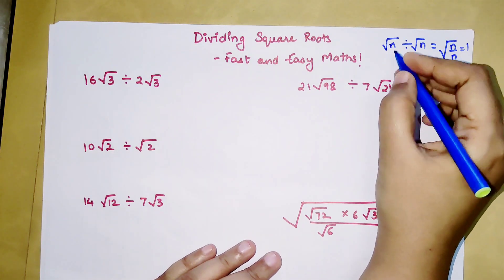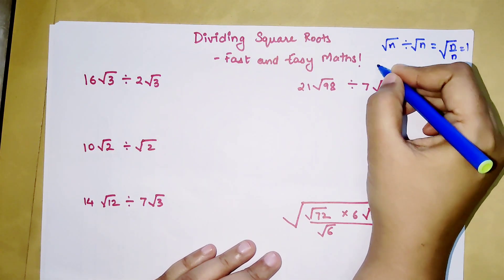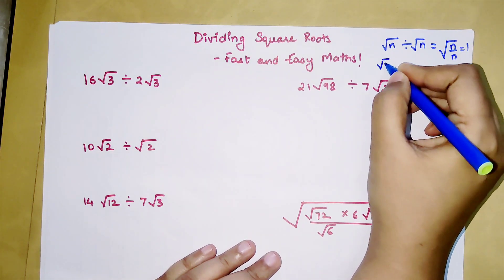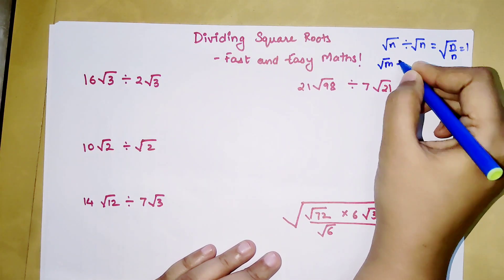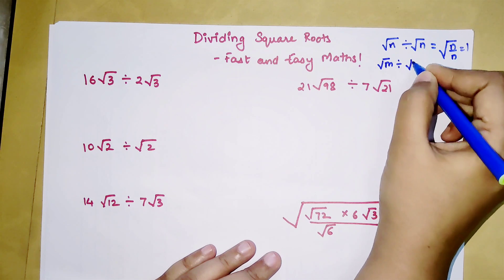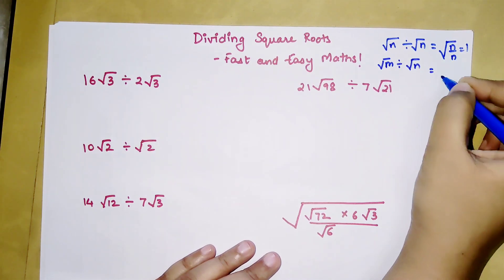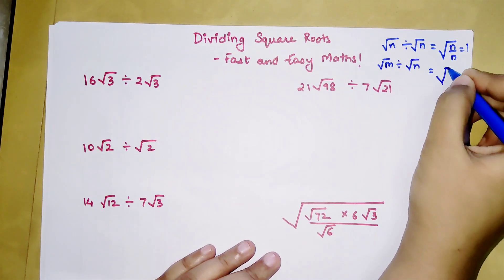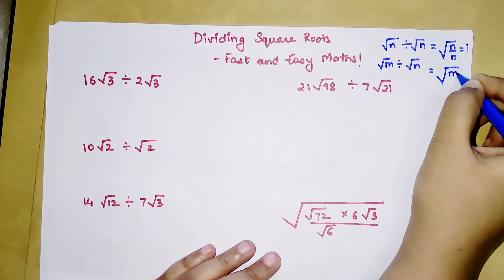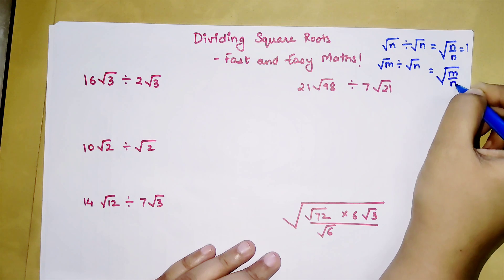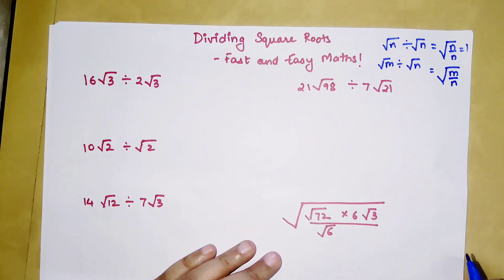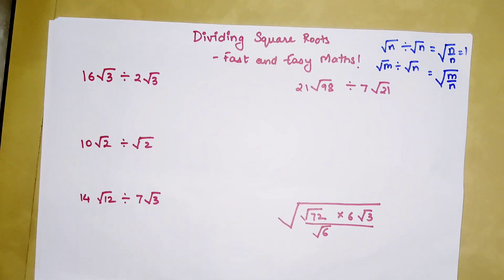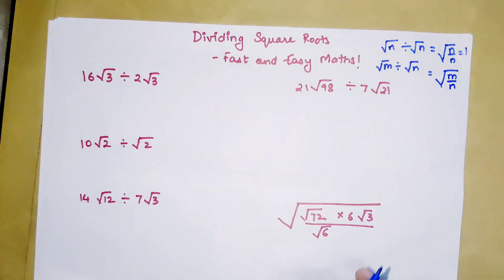And if you have a different number divided by a different number under square roots, you can directly put them together under one square root. These are the two basic rules to follow for these kinds of questions.